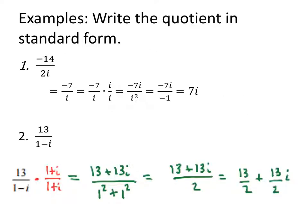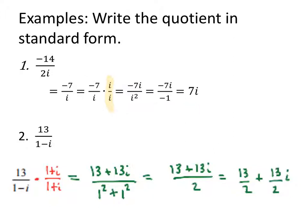So let's work with simplifying. Negative 14 over 2i — to me this is a silly example, but I do it every semester anyway. Simplify the 14 and 2 first — that becomes negative 7 over i. And if I have just an i in the denominator, I can multiply both numerator and denominator by i, and really what I'm doing is multiplying by a form of 1. Negative 7i over i squared — i squared is negative 1 — so negative 7i divided by negative 1 is a positive 7i.